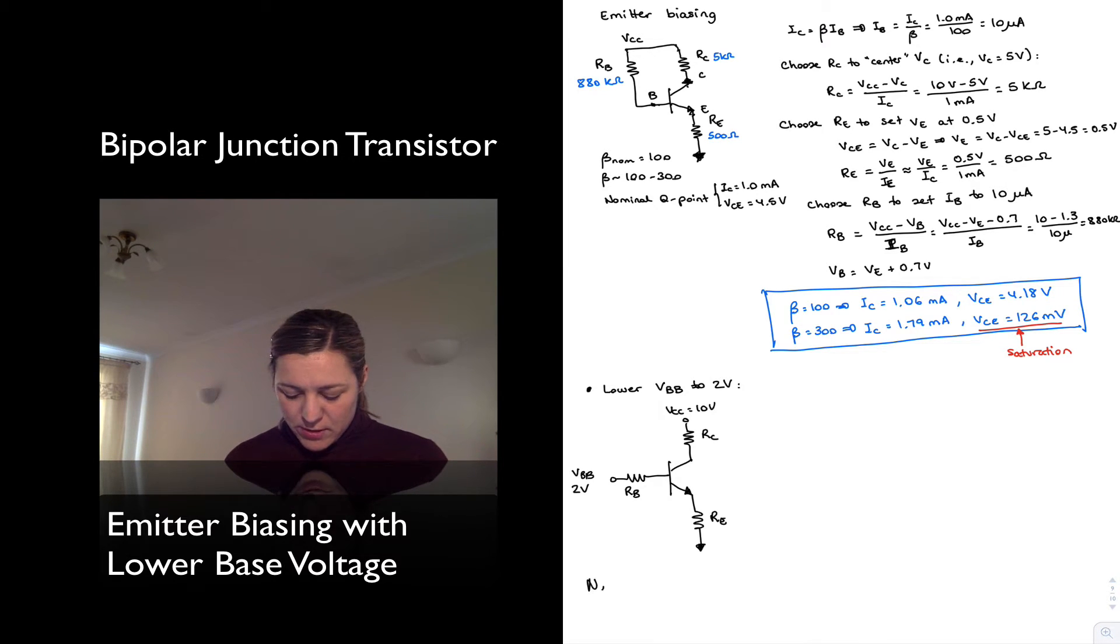Let's take a look at what happens, and I'm going to keep my same nominal Q point as before just for ease of comparison. So my IC is going to be 1 milliamp. My Vce is going to be 4.5 volts.